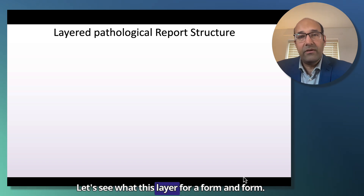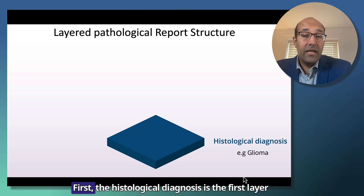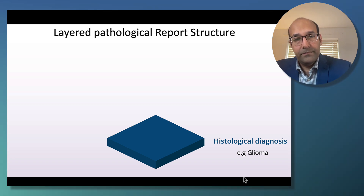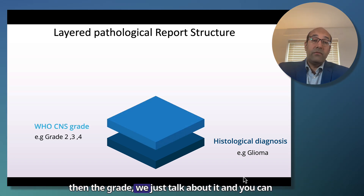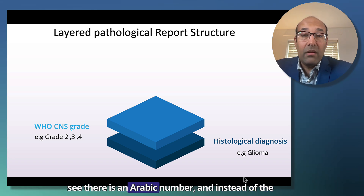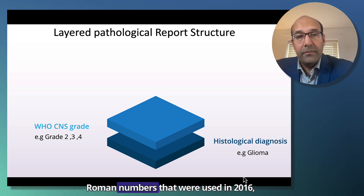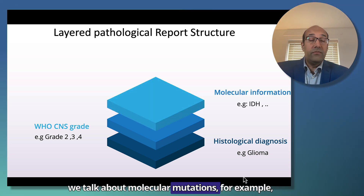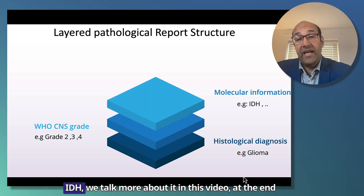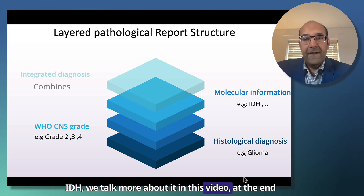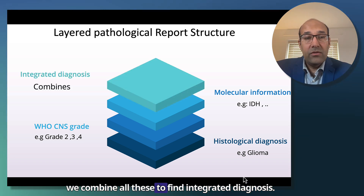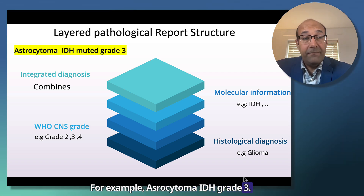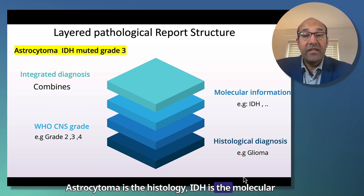Let's see what layers this is formed from. First, the histological diagnosis is the first layer — what type of cells it's coming from. Then the grade, as we just discussed. You can also see there are Arabic numerals instead of the Roman numerals that were used in 2016. We talk about molecular mutations, for example IDH — we'll talk more about it in this video. At the end, we combine all these to find an integrated diagnosis. For example: astrocytoma, IDH mutant, grade 3. Astrocytoma is the histology, IDH is the molecular mutation, and grade 3 is the grade.